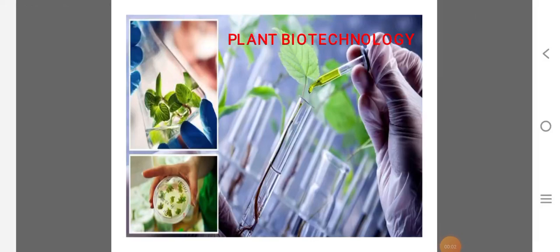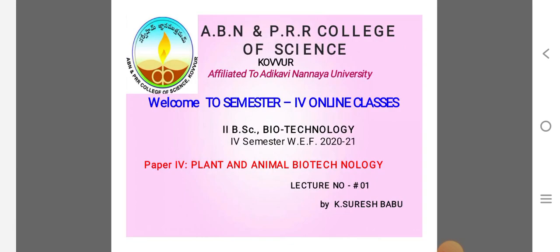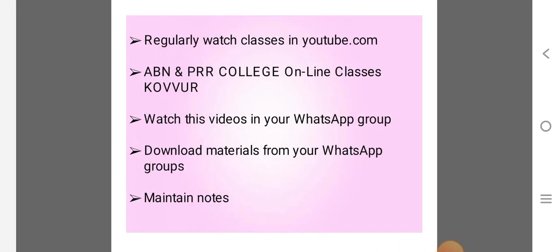Very good morning students. The session for second year biotechnology students, fourth semester. Title of the paper is Plant and Animal Biotechnology. You can watch regularly class of online classes in our YouTube channel, name of the YouTube channel is ABN and PRR online classes. Watch these videos in your WhatsApp groups, download materials from your WhatsApp groups.